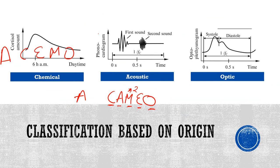Chemical biosignals reflect the chemical composition and its temporal changes in the body's solids, liquids, and gases. An example is cortisol, the stress hormone, over 24 hours. Humans have a peak during the morning hours in order to prepare the body for awakening, and cortisol levels reduce over the course of the day. It's a slowly-changing, quasi-static signal with a chemical origin, so we classify it as a chemical biosignal.